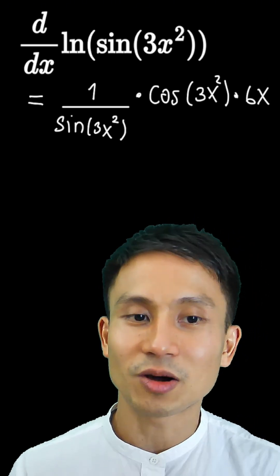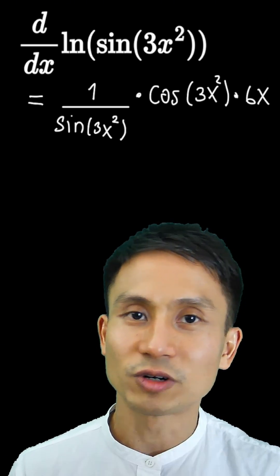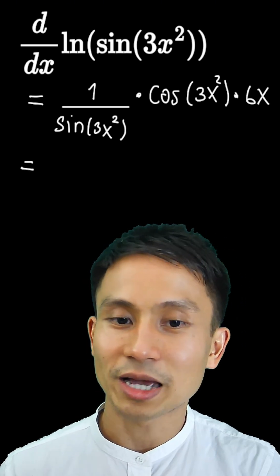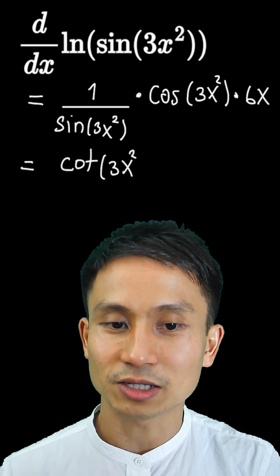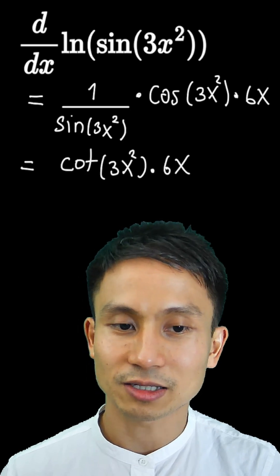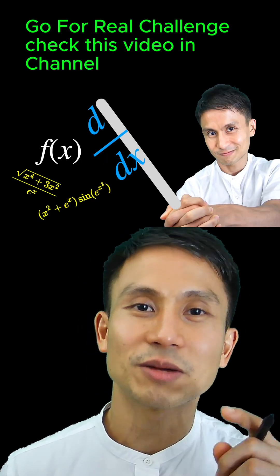If we want to simplify all this, we see that cos over sine is cot. So I can write cot of the same angle, 3x squared, times 6x. Let's jump to the challenge.